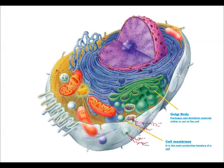Second is the Golgi body. It packages and distributes material within or out of the cell.